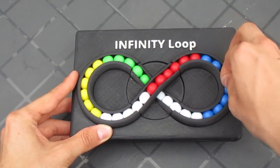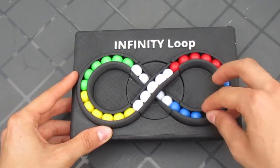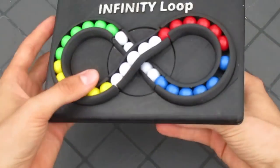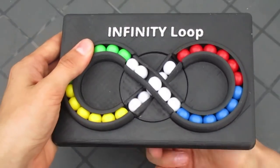Unlike what you might be used to on the well-known Hungarian rings puzzle, the two circles on the Infinity Loop are not overlapping each other, but instead form one continuous loop that looks like the infinity symbol.